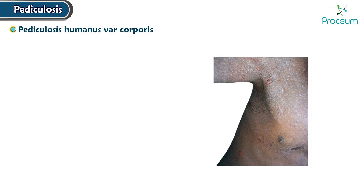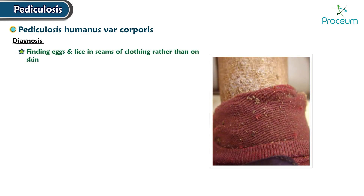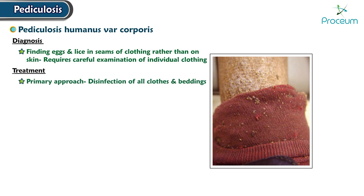Now let's talk about the diagnosis. Unlike head and pubic lice, body lice infection is usually diagnosed by finding eggs and lice in the seams of clothing rather than on the skin. Hence, it requires careful examination of individual clothing. The primary approach to treatment involves disinfection of all clothes and beddings.